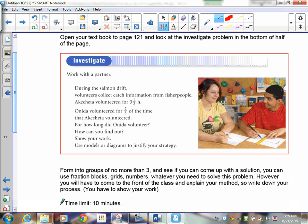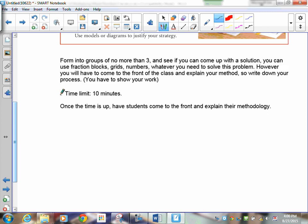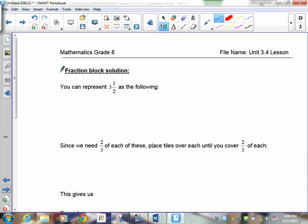If you open up your textbook, page 121, let's look at the investigation problem here. It says here, during the salmon drift, volunteers collect catch information from fisher people. Akecheta volunteered for 3 and a half hours. She is going to volunteer for 2 thirds of the time that the other, the young man did. So 2 thirds times 3 and a half. What I would do normally with you is I'd have you set it up and go into your class, grab a partner, and try to figure out how to do it and then come back and explain your methodology. But what I'm going to do is I'm just going to do it as a fraction block simulation here for you.